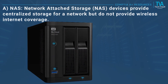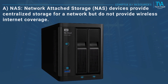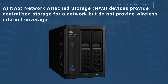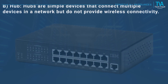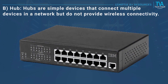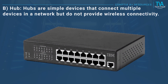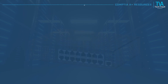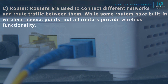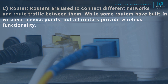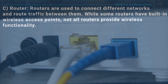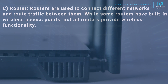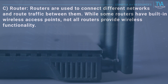A, NAS: network attached storage (NAS) devices provide centralized storage for a network but do not provide wireless internet coverage. B, hub: hubs are simple devices that connect multiple devices in a network but do not provide wireless connectivity. C, router: routers are used to connect different networks and route traffic between them. While some routers have built-in wireless access points, not all routers provide wireless functionality.